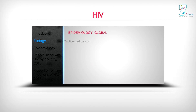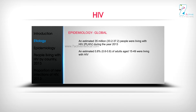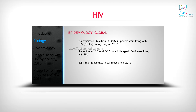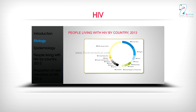Epidemiology — Global: An estimated 35 million (33.2 to 37.2 million) people were living with HIV. An estimated 0.8% (0.6 to 0.8%) of adults aged 15 to 49 were living with HIV. There were 2.3 million estimated new infections in 2012. Overall incidence rates among adults decreased from 0.11% in 2000 to 0.05% in 2012.